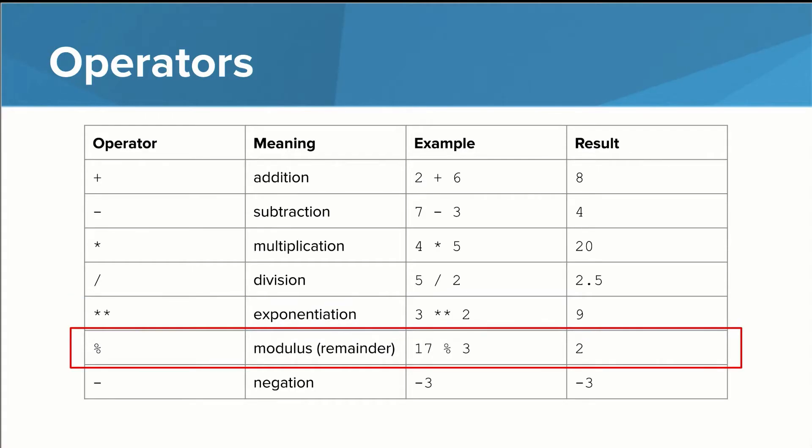The modulus operator finds the remainder when you divide one number by another. In the example, dividing 17 by 3 results in a remainder of 2.